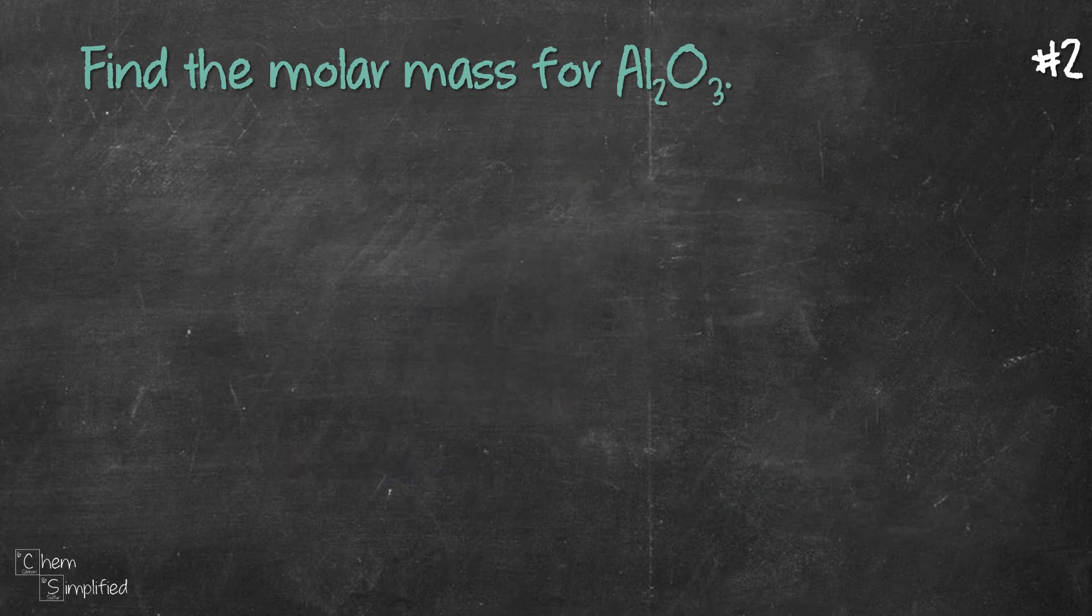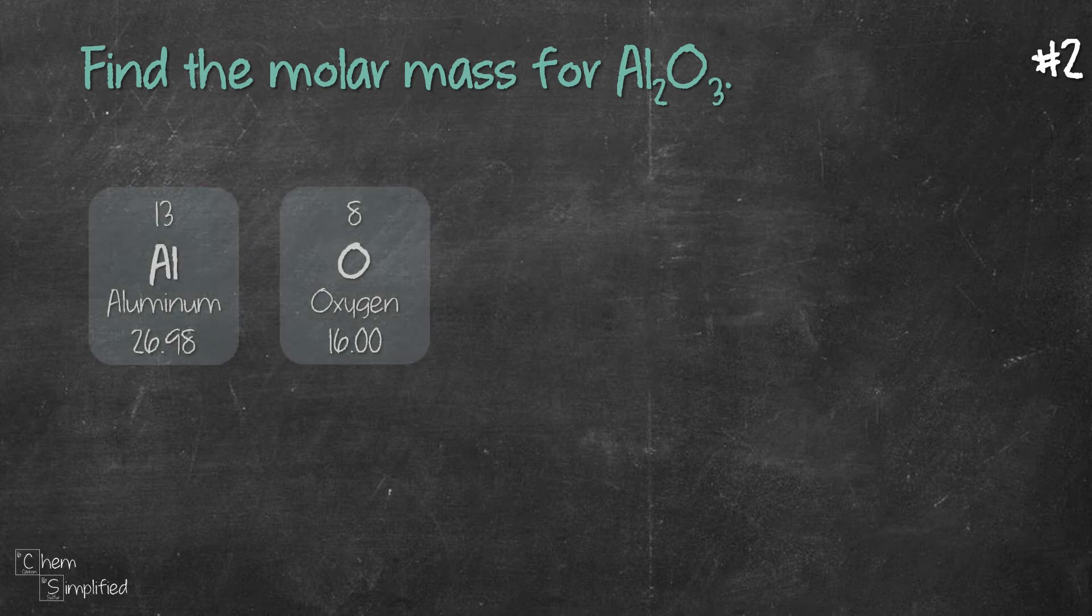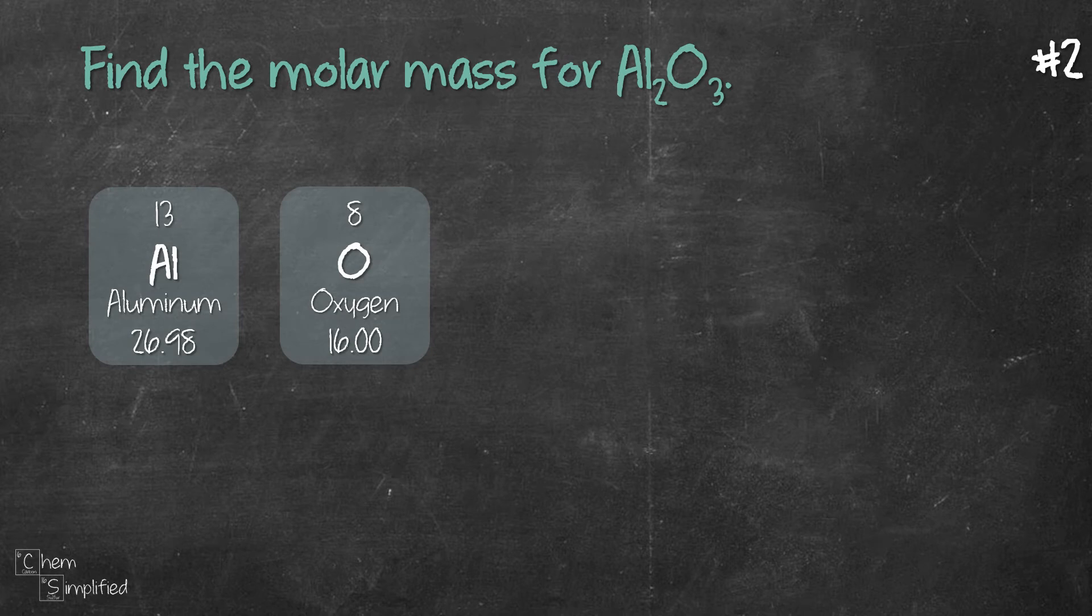Moving on to our second example. Now this one has more than one atom. We're finding the molar mass for aluminum oxide, which is Al2O3. First thing first, let's pull out the info from the periodic table for aluminum and oxygen.